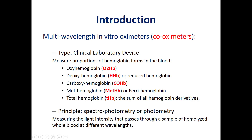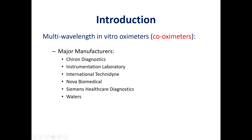After measuring these four types of hemoglobin, we can calculate the total hemoglobin. The principle of this lab co-oximeter involves a hemolyzed whole blood sample. We pass light through it and measure absorbance at different wavelengths to measure the different hemoglobin derivatives. Here we can see some major manufacturers of lab co-oximeters.